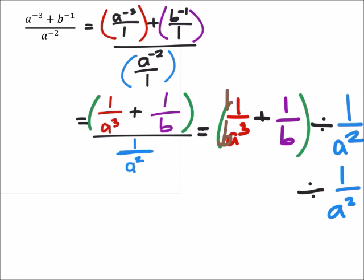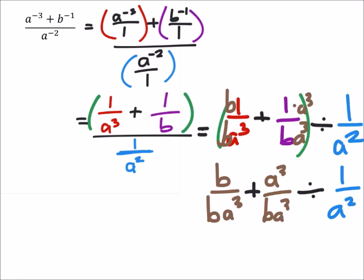So in other words, I'm going to multiply this a cubed by b, and 1 times b, which would give me b over b times a cubed. Then we'll add this to, so the b we're going to multiply by a cubed, and 1 times the a cubed as well, which would give us a cubed over b a cubed.